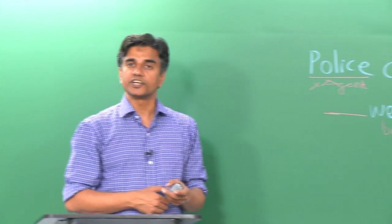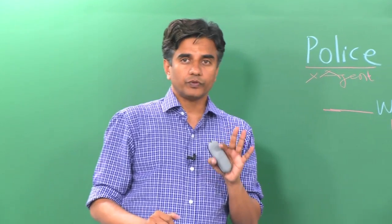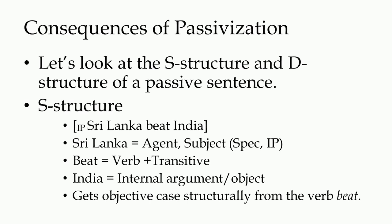Look carefully at the sentence 'Sri Lanka beat India.' Sri Lanka has the theta role agent and is the subject. Beat is a transitive verb. India is an internal argument of the verb beat — the direct object — and gets accusative case structurally from the verb beat. The subject Sri Lanka gets nominative case from the finite IP, and everything is taken care of.